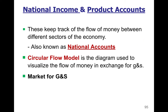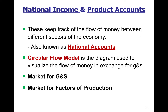In the circular flow model, there's a market for goods and services — this is where people generally buy goods and services and businesses sell them. There's also a market for factors of production, where companies are doing the buying and people are doing the selling.